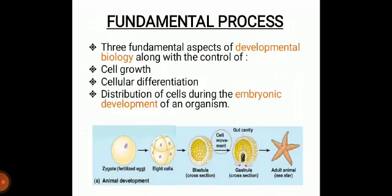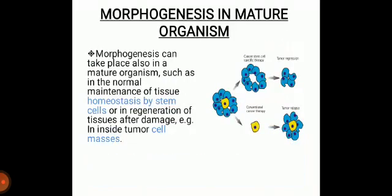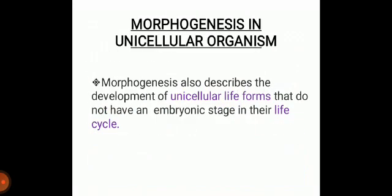The process also controls the distribution of cells during the embryonic development of an organism. Morphogenesis also takes place in mature or multicellular organisms, such as in the normal maintenance of tissue homeostasis by stem cells or in the regeneration of tissues after damage. Morphogenesis is essential for the evolution of new forms. Therefore, morphogenesis also describes the development of unicellular life forms that do not have an embryonic stage in their life cycle.